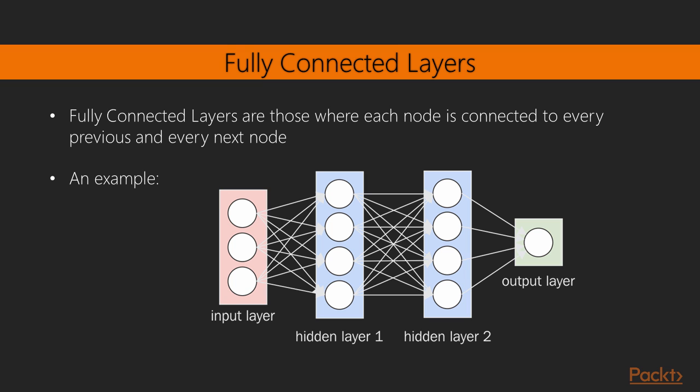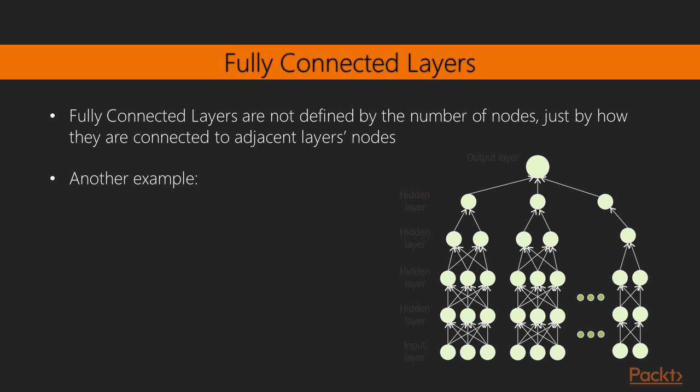You'll see many variations of this. Often, the fully connected layers will show up at the end of a series of layers. In another diagram, you can see a network architecture with several fully connected layers and far more nodes on each layer. The number of nodes is irrelevant to the fully connectedness — only the connections to the previous layers matter in this definition.